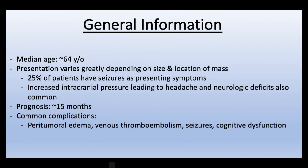The median age of patients who present with glioblastomas is around 64 years old. Presentation varies greatly depending on size and location of mass, but 25% of patients do have seizures as presenting symptoms. Common symptoms include increased intracranial pressure, leading to headache and neurologic deficits. The average prognosis is around 15 months. Common complications include peritumoral edema, venous thromboembolism, seizures, and cognitive dysfunction.